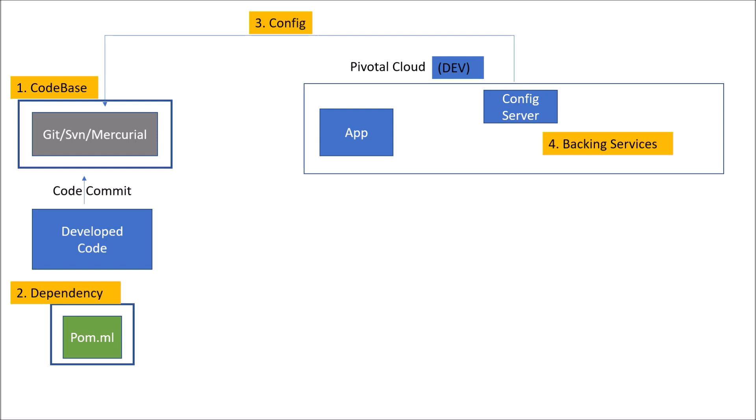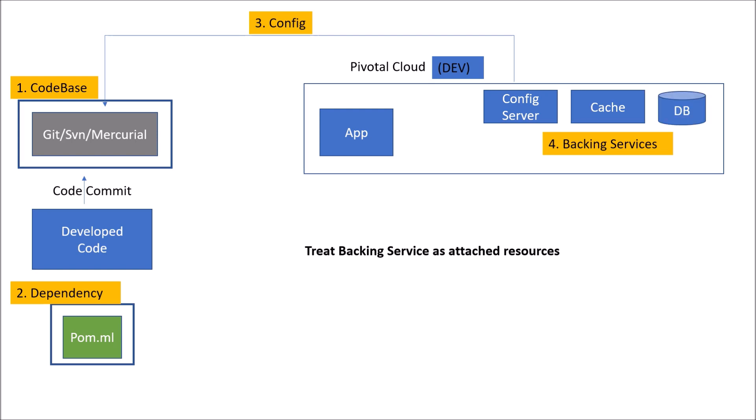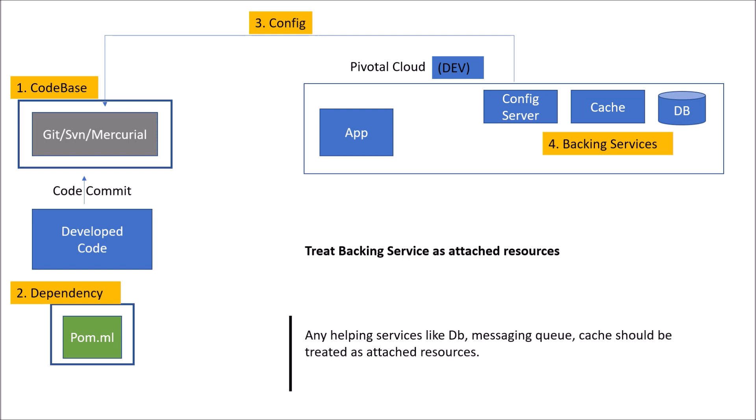When we say backing services, this factor says: treat any service as an attached resource. In microservice architecture, apart from the core code, any other services being used — like config server, messaging queue, cache, or DB — are treated as backing services. These backing services like DB, message queue, and cache should be treated as attached resources, and these attached resources follow an easier plug-and-play model.